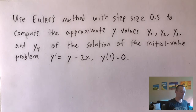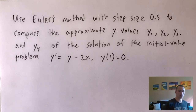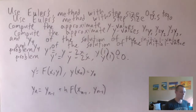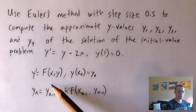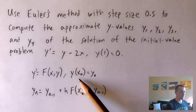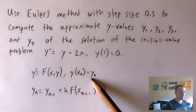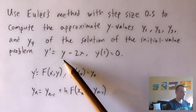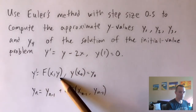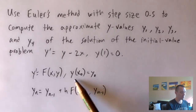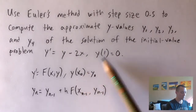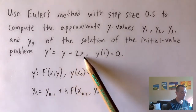Basically what my Calculus 2 study guide says about Euler's method is it gives you a formula where if you know the previous estimate to the solution, you can use it to get the next estimate. So if we're given an initial value problem where we have y′ = f(x, y) and we know that when x is x₀, y is y₀ — in this case our f(x, y) is y − 2x, and y(1) = 0 corresponds to x₀ = 1, y₀ = 0.